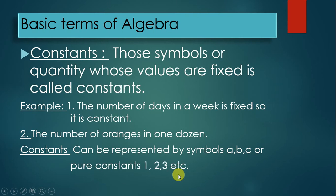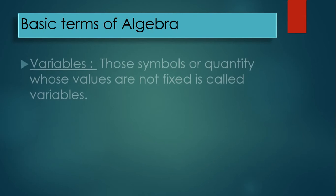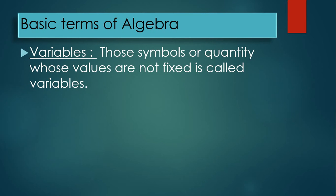Constants are typically represented by numbers like 1, 2, 3, or by letters a, b, c. Now moving to the next term: variables. Variables are quantities or symbols whose values do not remain constant — they change from place to place, from time to time, and from equation to equation.